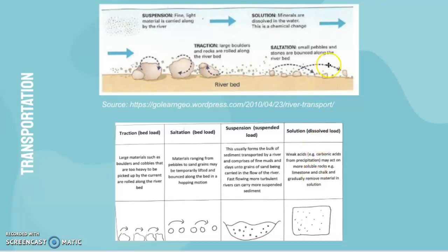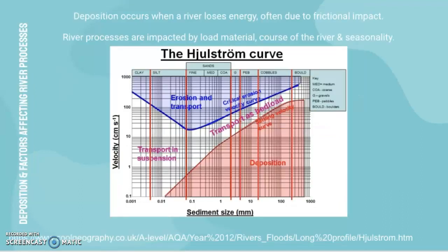Moving on to deposition: deposition occurs when the river loses energy, often due to frictional impact, and then deposits whatever it's carrying. This often occurs at deltas. Now we're going to discuss how river processes are impacted by load material, course of the river, and seasonality.